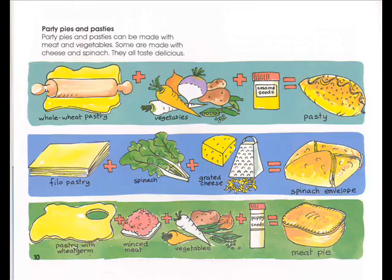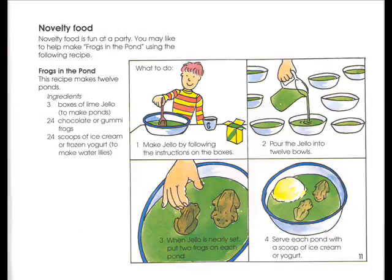Novelty food is fun at a party. You may like to help make it. Frogs in the Pond: This recipe makes 12 ponds. Ingredients: 3 boxes of lime jello to make ponds, 24 chocolate or gummy frogs, 24 scoops of ice cream or frozen yogurt to make water lilies. What to do: Make jello by following the instructions on the box. Pour jello into 12 bowls. When jello is nearly set, put two frogs on each pond. Serve each pond with a scoop of ice cream or yogurt.